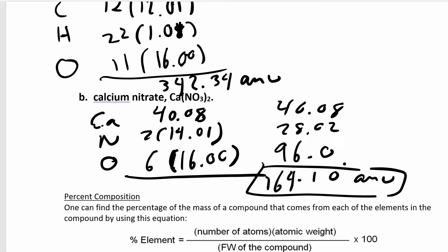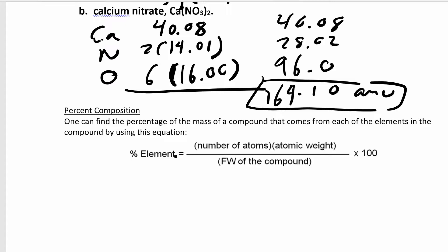That's the formula weight for calcium nitrate. Just be careful when you have something outside the parentheses that you've distributed it through. Now the last thing we're going to do is looking at percent composition. If you want to figure out the mass percent with respect to a particular element,